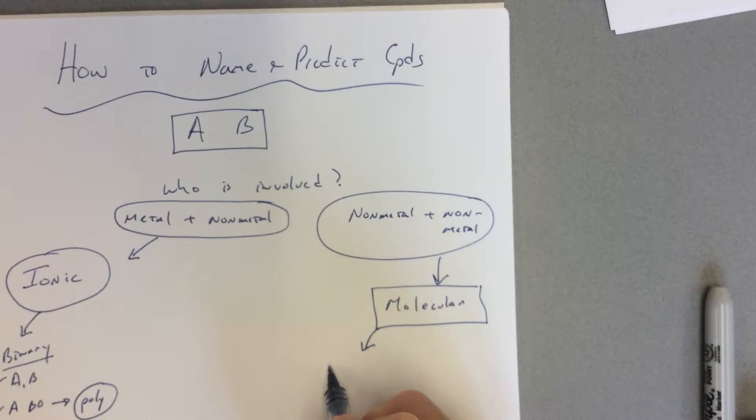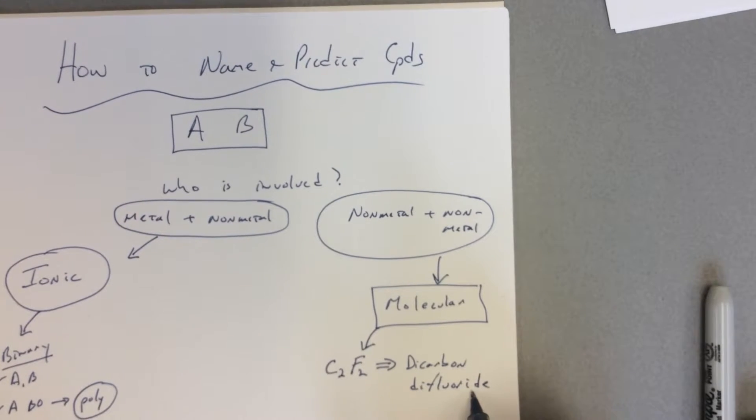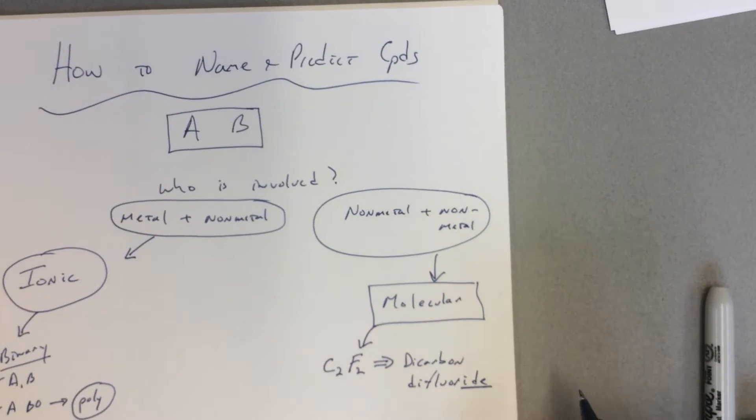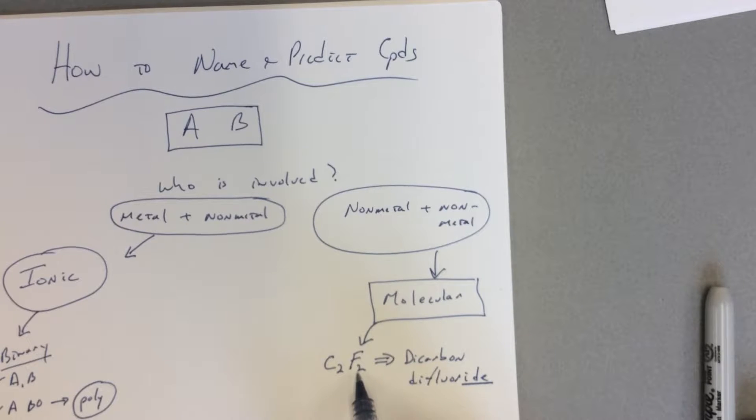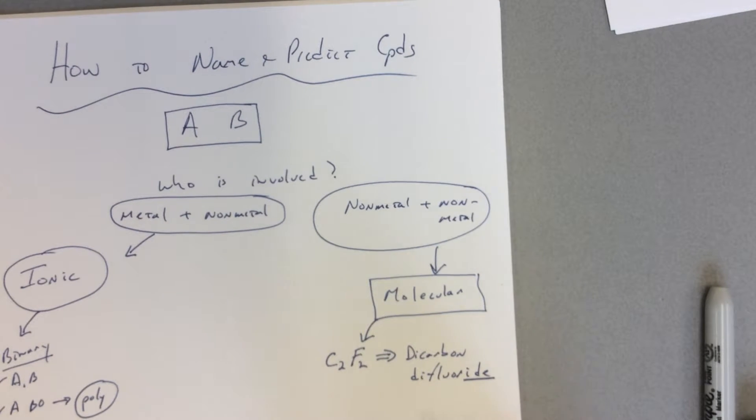If we're given the formula, say something like C2F2, then we have to use prefixes to name it. So obviously this would be dicarbon difluoride. Remember that the second element in the name always ends in -ide.